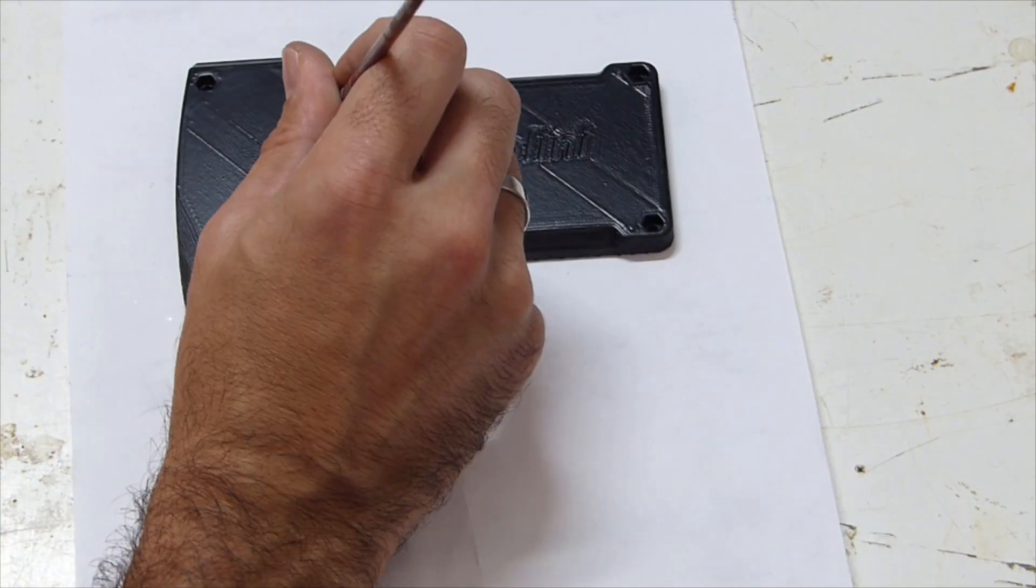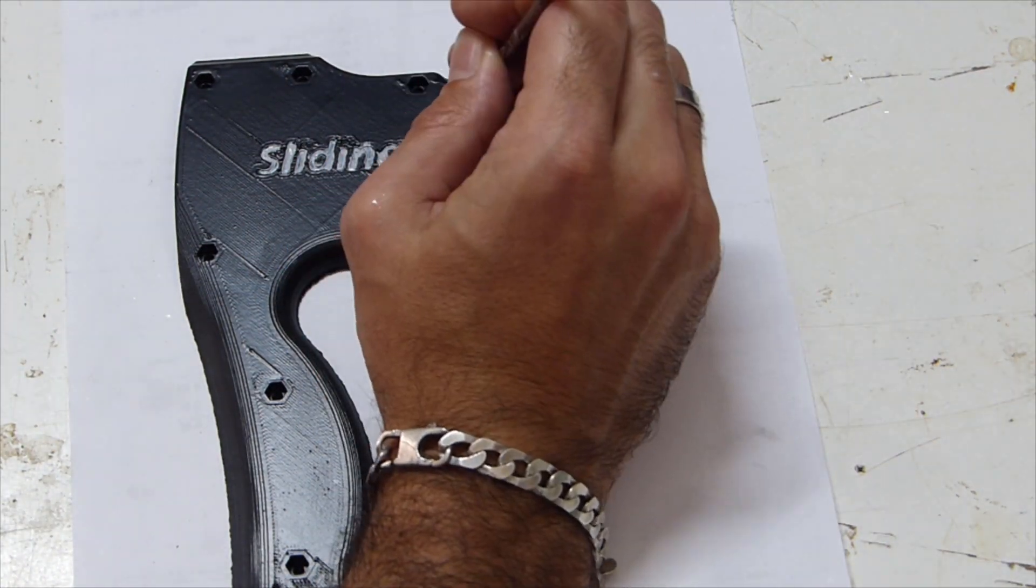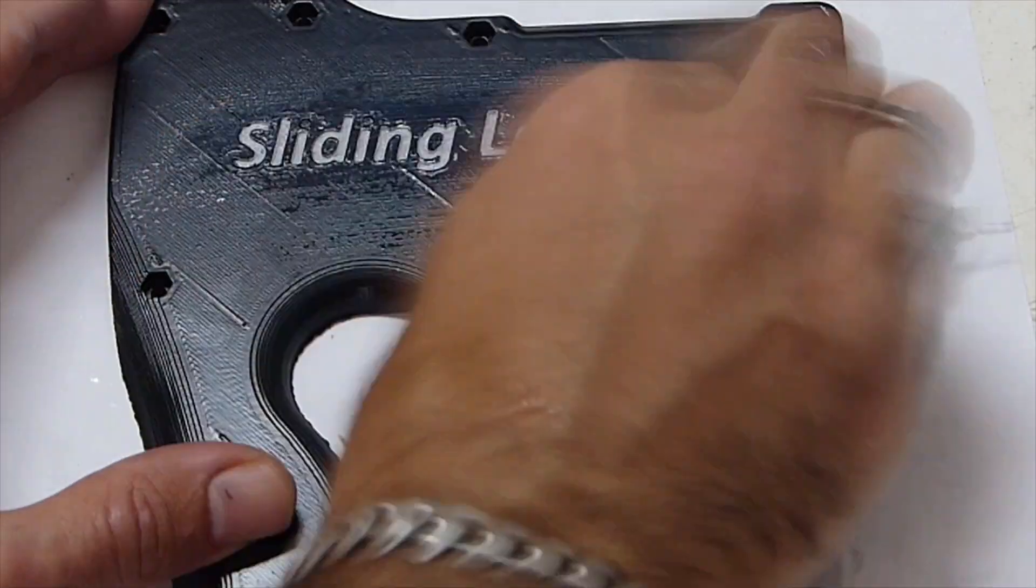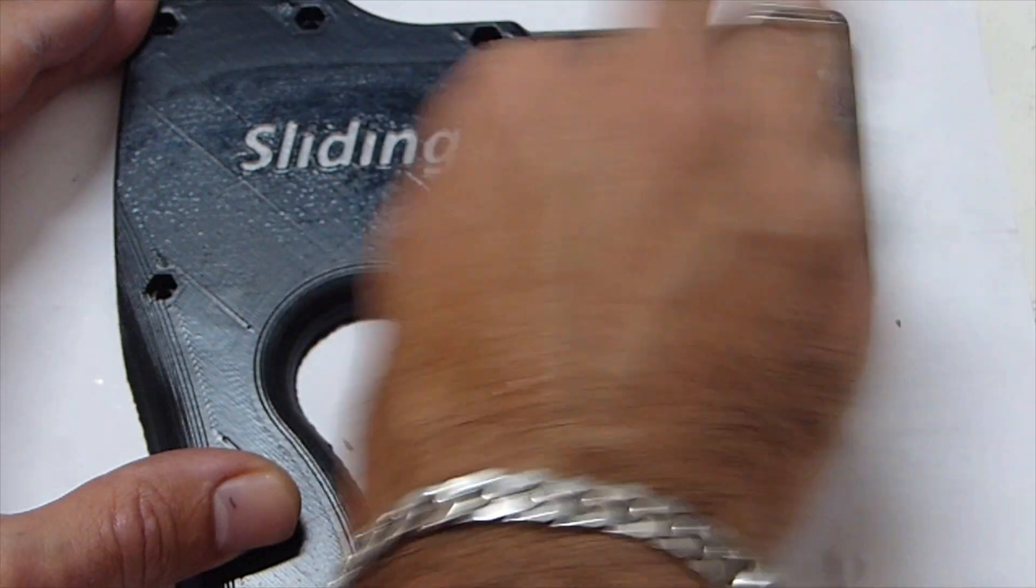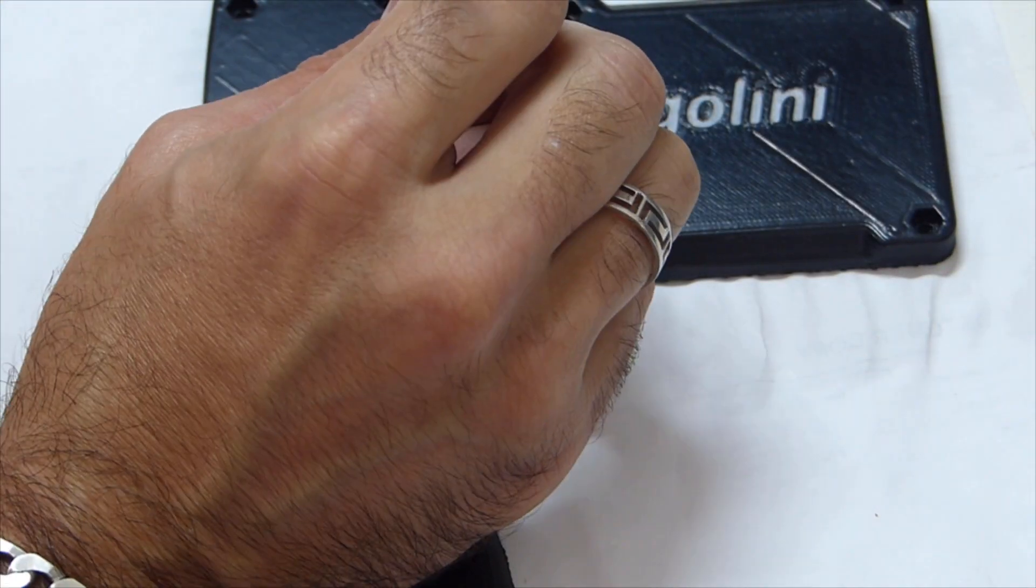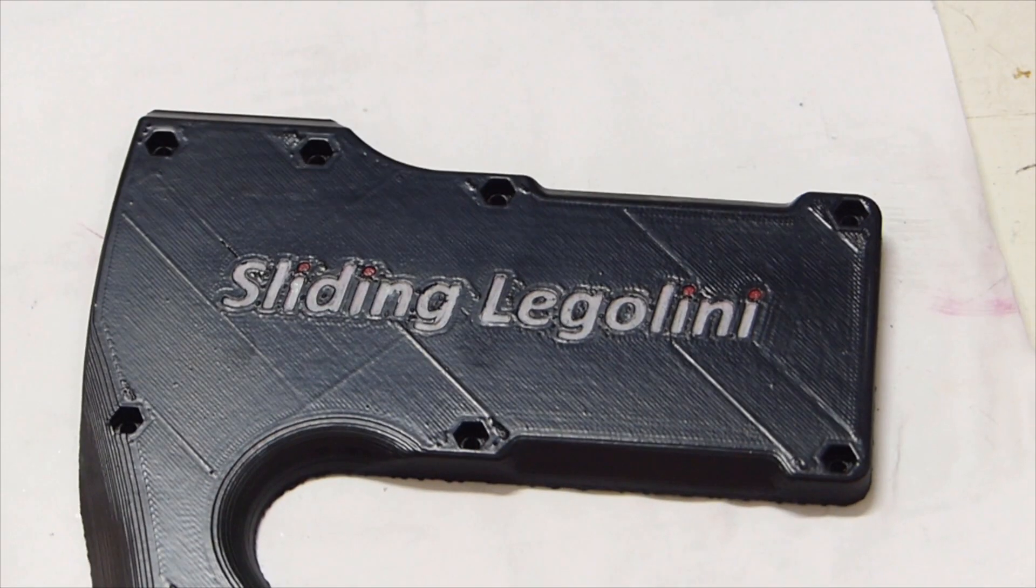I then proceeded to painting the sliding Legolini word grey with some acrylic paint. This would make it stand out more and it can be read better. Once dry, I wiped off any excess paint with a damp cloth and then dried it with a dry cloth and the result looked good. But then I dotted the eyes with some red acrylic paint and gave it a final wipe and there you go.